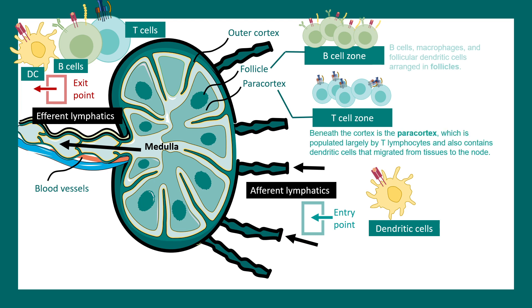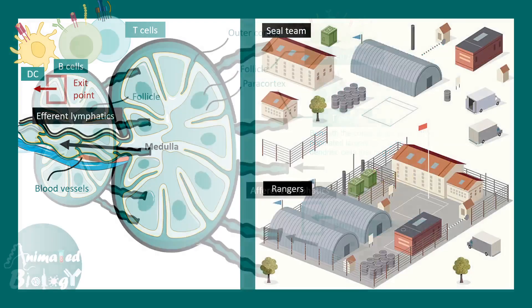B cells and T cells get activated, and several processes of differentiation happen in these regions. In that context, lymph nodes are super important in terms of immune modulation.